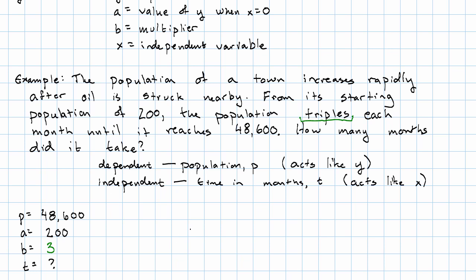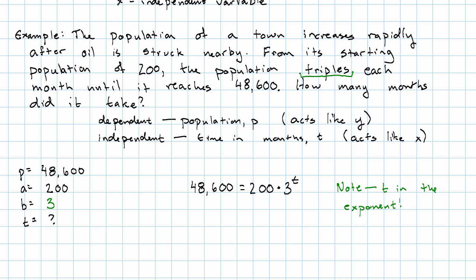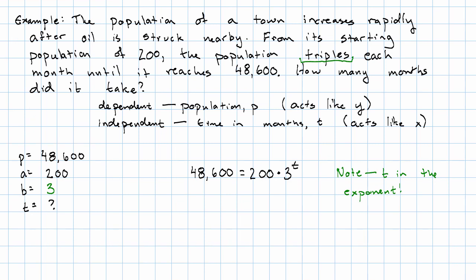We want to know the time that goes with population 48,600. In our equation, we get 48,600 equals 200 times 3 to the t-th power. How can we solve that equation? Notice, this t isn't multiplied by anything. It's not added to anything. T is in the exponent. One way we can solve this is just by making the table and seeing when p gets to 48,600.